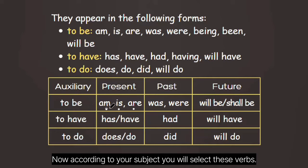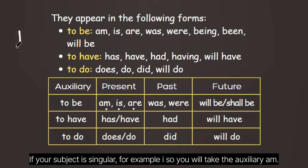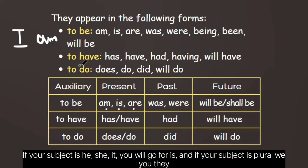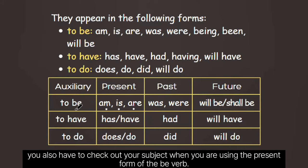According to your subject, you will select these verbs. If your subject is singular — for example, 'I' — you will take the auxiliary 'am' and then the main verb: I'm teaching, I'm sleeping, I'm eating. If your subject is 'he', 'she', 'it', you will go for 'is', and if your subject is plural — 'we', 'you', 'they' — you will go for 'are'. In the be verb, we have this technicality that it has three forms, but you also have to check your subject when you are using the present form.